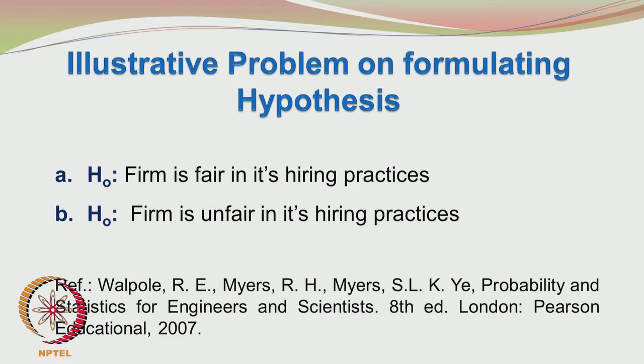Welcome back. We will continue on hypothesis testing. We were looking at an example on type 1 error and the judge passing his decision on the hiring practices of the firm. The reference for this example is the book written by Walpole, Myers, Myers and Ye, Probability and Statistics for Engineers and Scientists, 8th edition, published by Pearson Educational in 2007. It has a large number of illustrative examples, and there are also several other books which you may want to refer to.